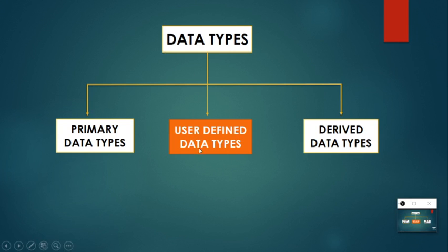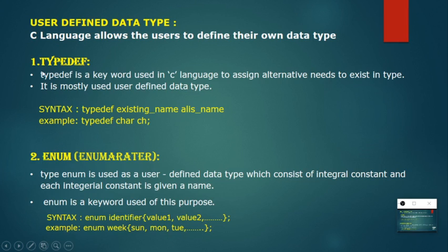Coming to the next category — user-defined data type. User-defined data type contains two types: typedef and enum. User-defined data types allow the user to define their own data type. Let's see the first one, typedef — typedef is used to give an alias name for an existing data type.